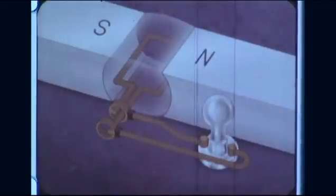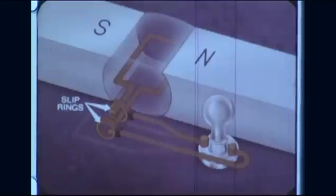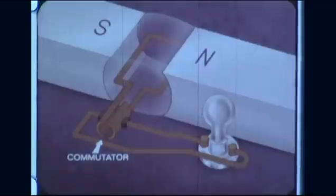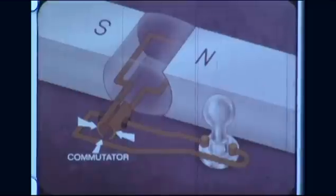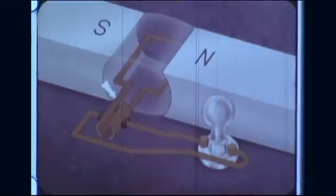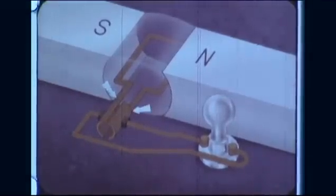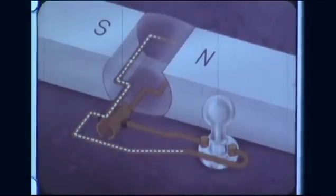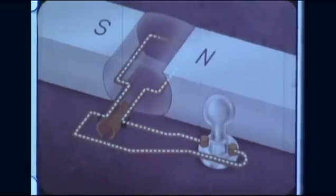To do this, we need only change the slip rings, which collect alternating current, to a commutator, which will rectify — that is, change AC to DC. The commutator is simply a ring divided into segments, each insulated from the other. One end of the coil is attached to one ring segment and the other end to another segment. As the coil rotates through the first half cycle, the induced current of one direction is collected from the commutator segment, flows through the external circuit, then back to another commutator segment and the coil, completing the circuit.